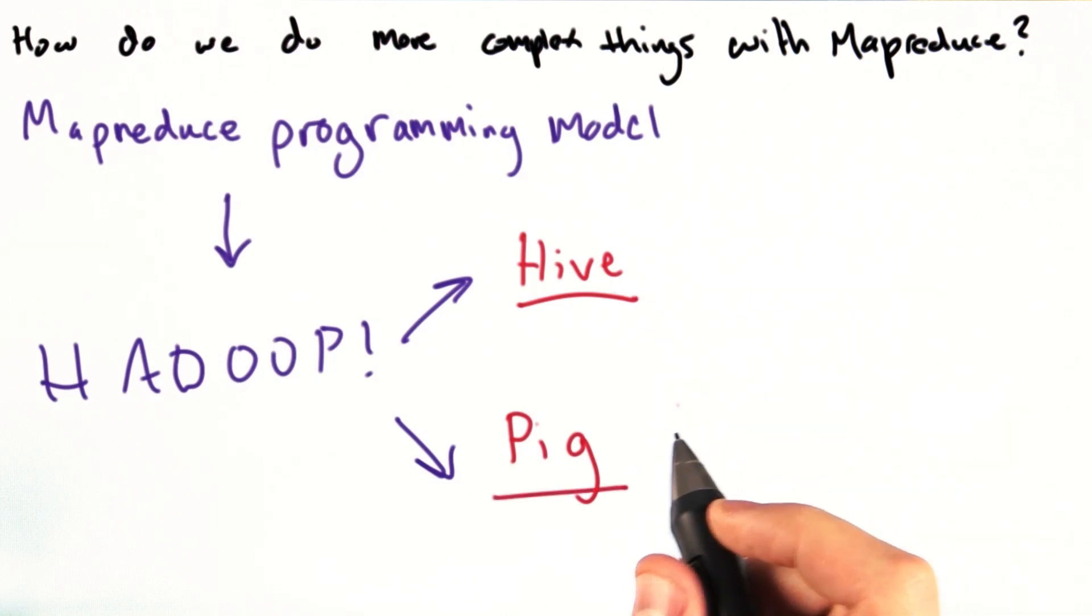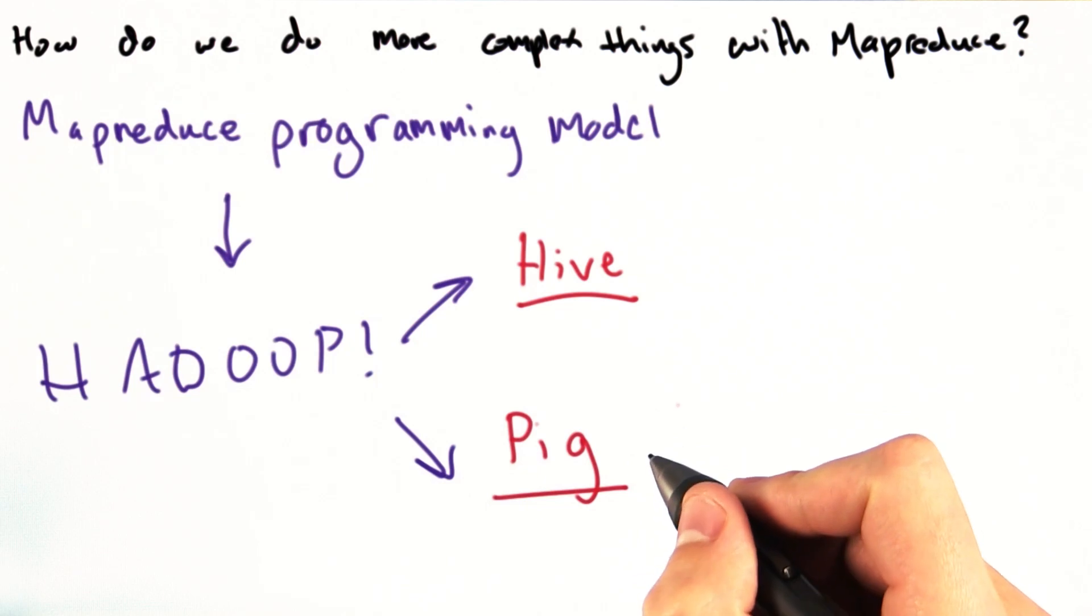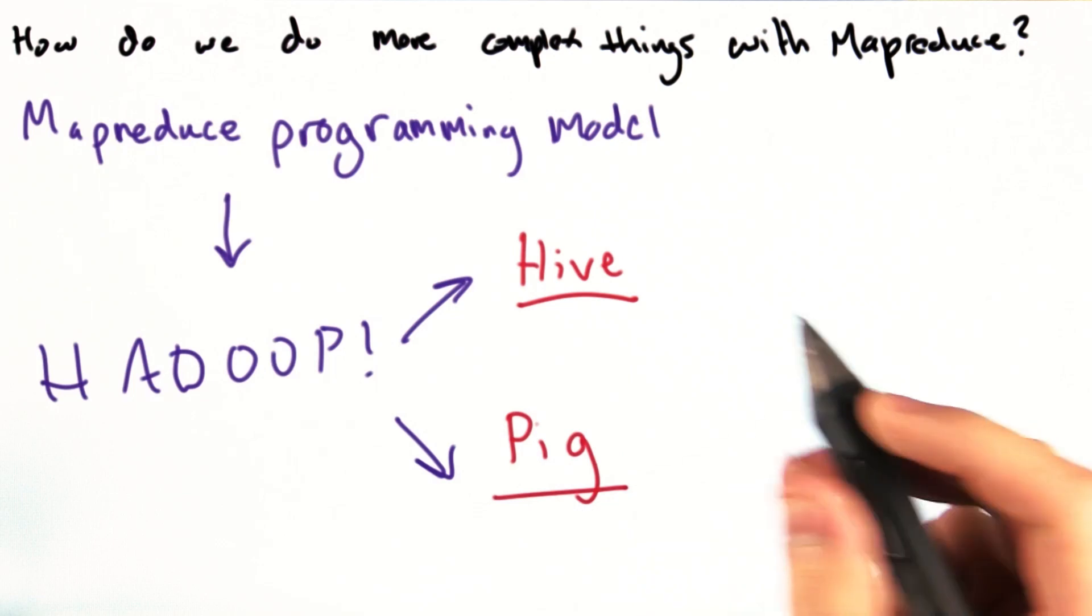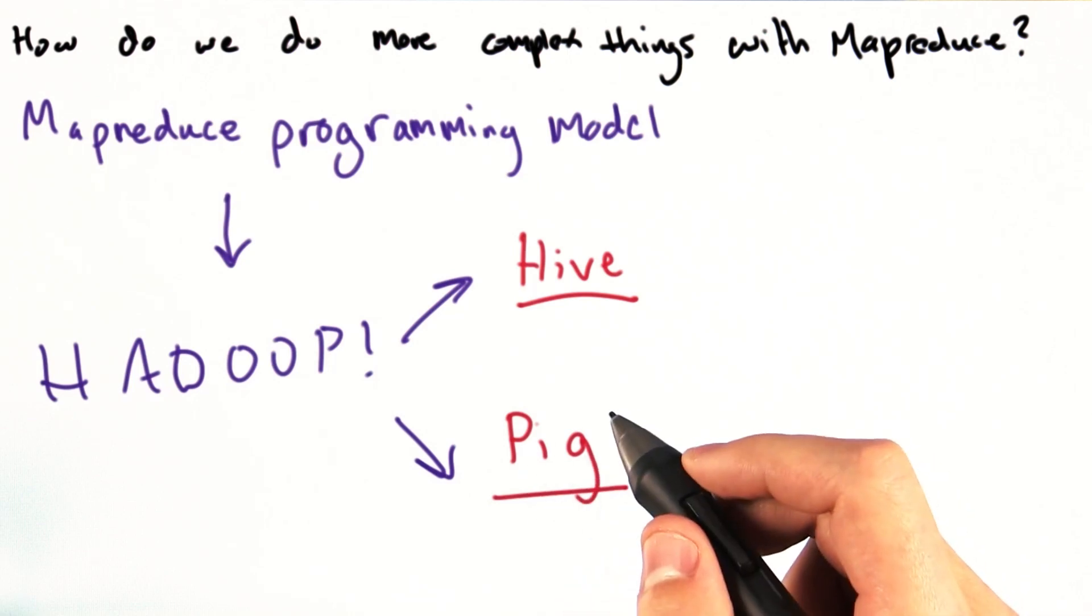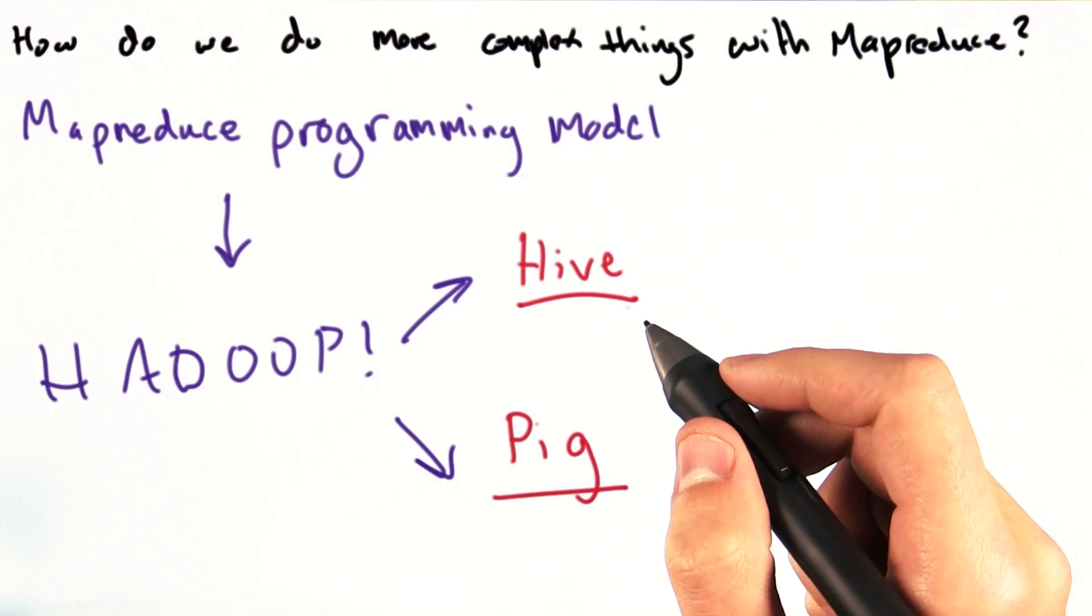Pig was originally developed at Yahoo and excels in some areas Hive does not. Pig jobs are written in a procedural language called Pig Latin. This wins you a bunch of things, among them the ability to be more explicit about the execution of your data processing, which is not possible in a declarative language like SQL syntax, and also the ability to split your data pipeline.